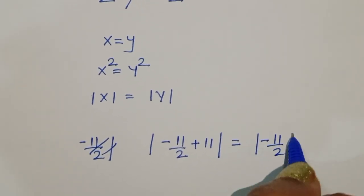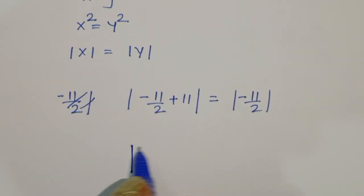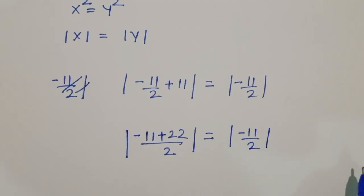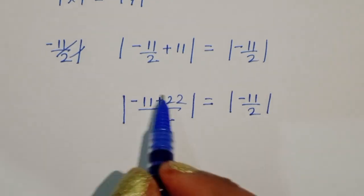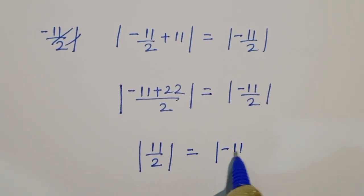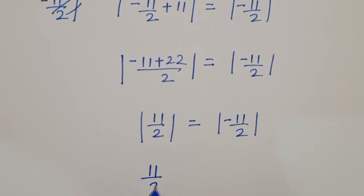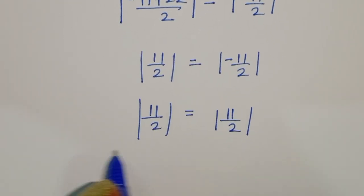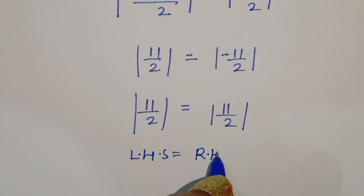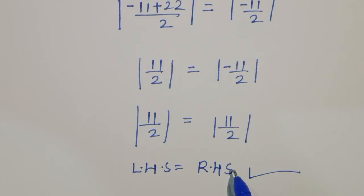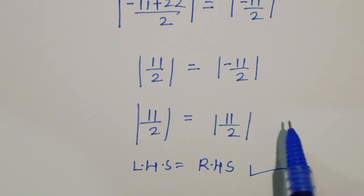Taking absolute value on both sides: |(-11 + 22)/2| = |-11/2|, which gives |11/2| = |-11/2|. The absolute value of 11/2 is 11/2, and the absolute value of -11/2 is also 11/2. So LHS equals RHS. Therefore, the value of a = -11/2 is verified when we take absolute values on both sides.